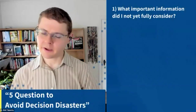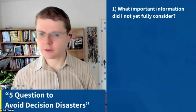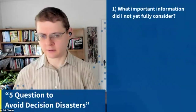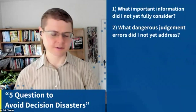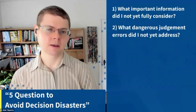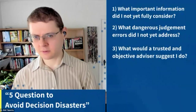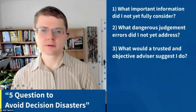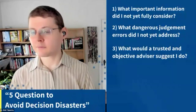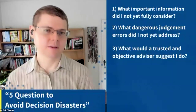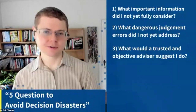I've seen a number of dentists be struck down by analysis paralysis, looking for trivial information — so you really want to decide what information is actually important for making a decision about someone. Second question: what dangerous judgment errors didn't I yet address? Think about the halo effect and the horns effect. If you're thinking about a project, think about the planning fallacy. Third question: what would a trusted and objective advisor suggest I do? Think about somebody who is a mentor, somebody you trust — like an angel on your shoulder. What would they suggest you do in this situation? You get a lot of benefit just by thinking of this person, and you get the rest by calling them.